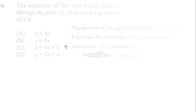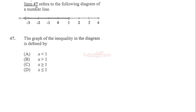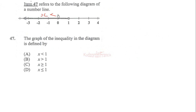Item 47 refers to a number line diagram. All the values shown represent x, and we can see that all values are less than one. So the correct choice is x is less than one.